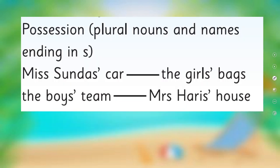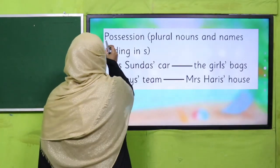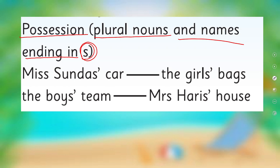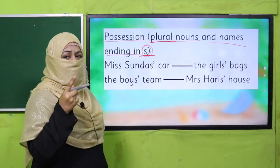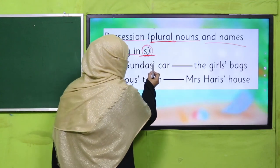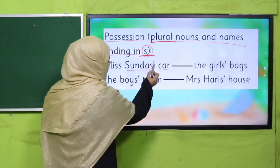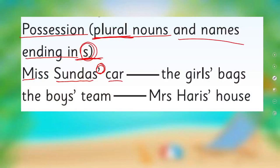Another way to show possession is for plural nouns and names that are ending in S. We use apostrophe-s normally, but if there is a plural noun — which already has an S — or a name ending in S, then we show possession by putting an apostrophe after the S. For example, 'Miss Sundar's car' — the apostrophe comes after the S, and it shows possession: whose car? Miss Sundar's.